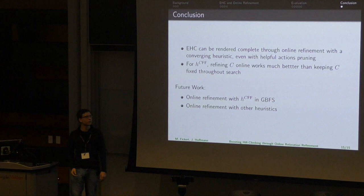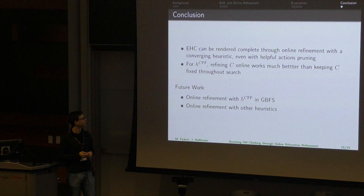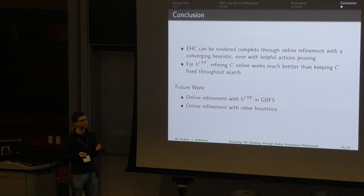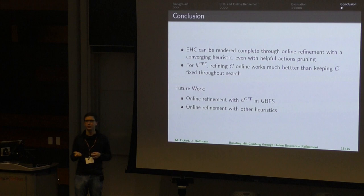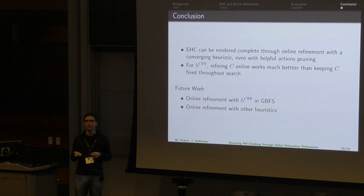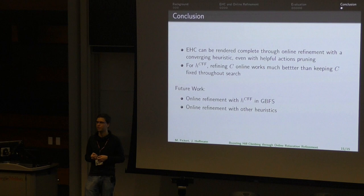To conclude: we have shown that a variant of enforced hill climbing can be made complete even with helpful actions pruning through online refinement of the heuristic. For the H-CFF heuristic, online-generated conjunctions yield a more informative heuristic than generating them only in the initial state. For future work, we want to extend online refinement to greedy best-first search — preliminary results are promising, with some configurations outperforming the Refinement HC algorithm shown here. We also want to explore online refinement with other heuristics such as Cartesian abstractions, which could extend our approach to optimal planning.